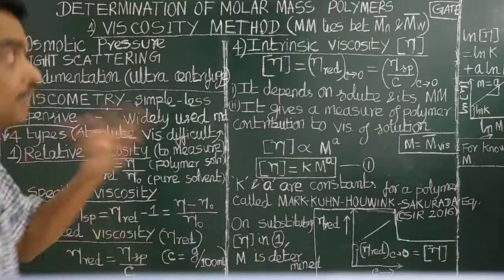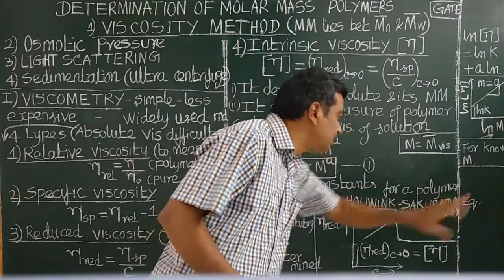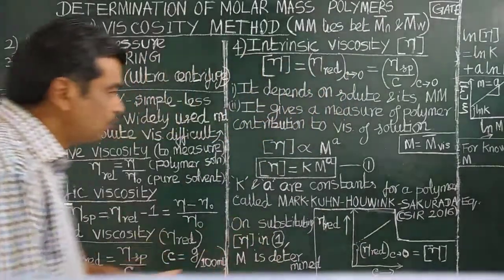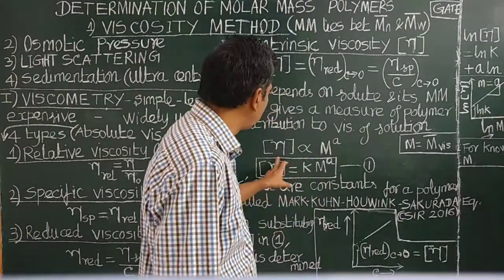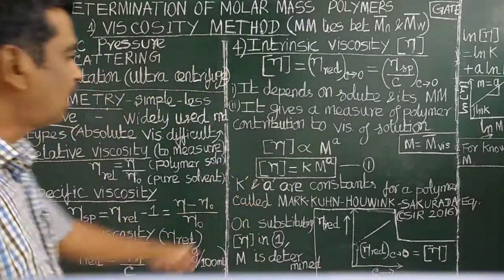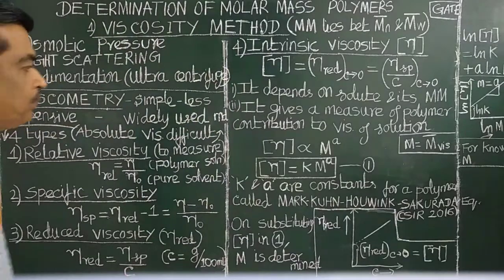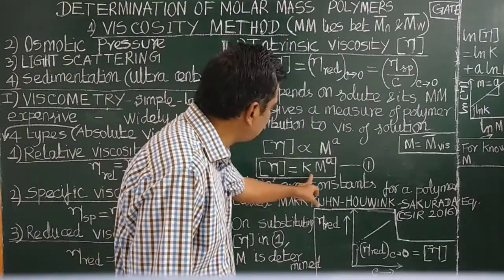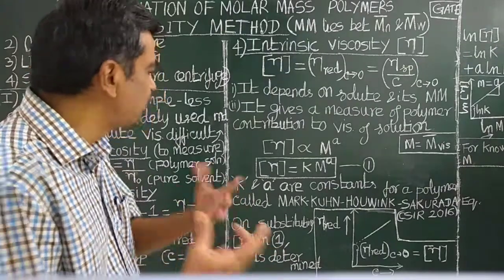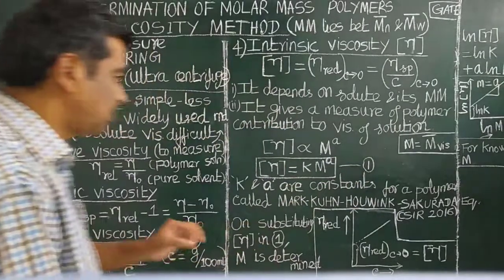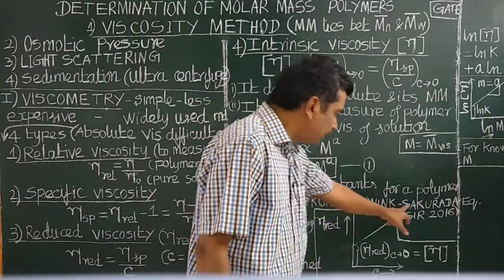There is a relation between intrinsic viscosity and molecular weight given by the Mark-Houwink equation. The intrinsic viscosity is directly proportional to molar mass to the power A. Therefore, intrinsic viscosity is equal to K into M to the power A, where K and A are constants for a particular polymer-solvent system. This equation gives the relationship between intrinsic viscosity and molar mass of the polymer. It is called the Mark-Houwink equation.